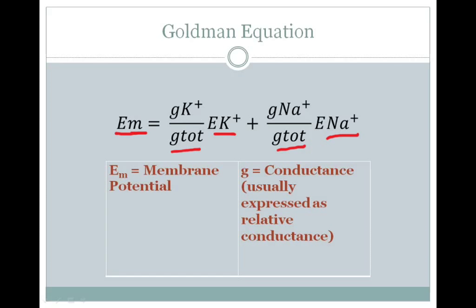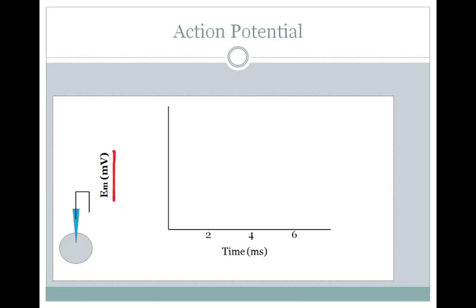If we're recording membrane voltage from a cell, we have our electrode inside of our cell, so we're recording inside relative to outside. If that cell only had potassium channels, then that cell's equilibrium potential and membrane potential would be equal to the equilibrium potential of potassium, which as we have measured before is minus 60 millivolts. So your electrode would measure minus 60 millivolts if all you had were potassium channels in that cell.